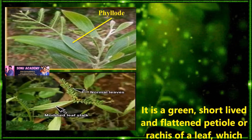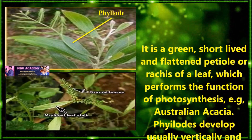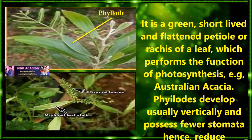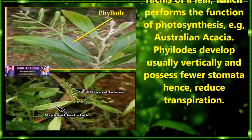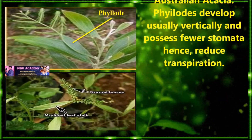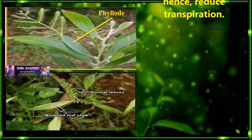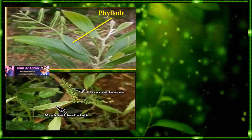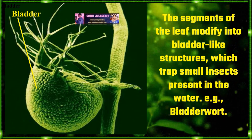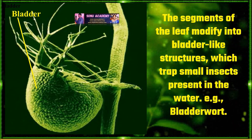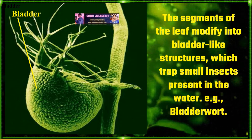Phyllode: it is a green, short, leaf-like flattened petiole or rachis of a leaf which performs the function of photosynthesis. Examples: Australian Acacia. Phyllodes develop usually vertically and possess fewer stomata, hence reducing transpiration. Bladder: the segments of the leaf modified into bladder-like structures which trap small insects present in water. Example: bladderwort.